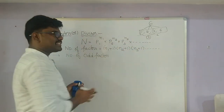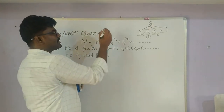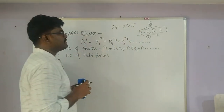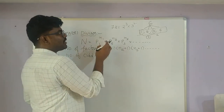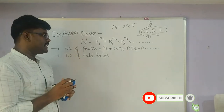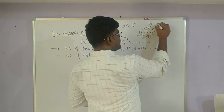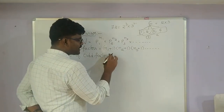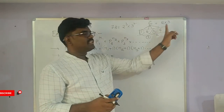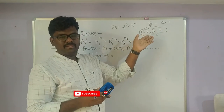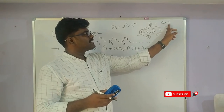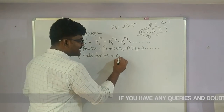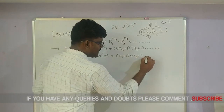For 72 written as 2³ × 3², how many odd factors are there? To find odd factors, we observe only the odd prime factor powers — that is, all prime factors except 2. The number of odd factors formula uses only the odd prime factors: (n1 + 1)(n2 + 1)... where n1, n2, ... are the powers of the odd prime factors only.